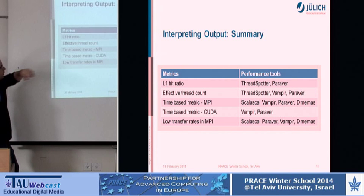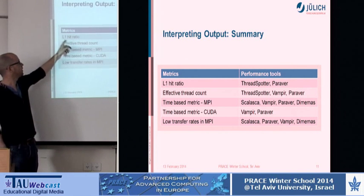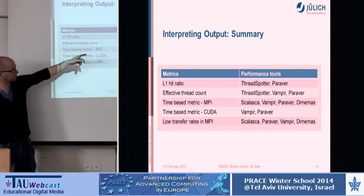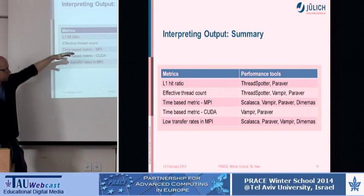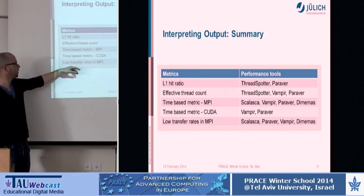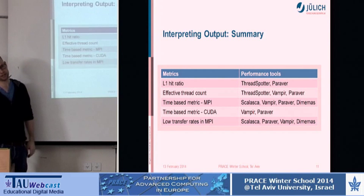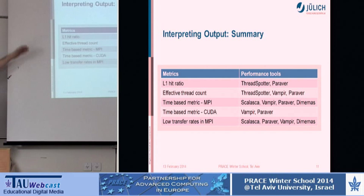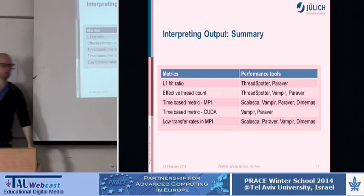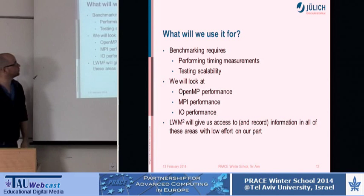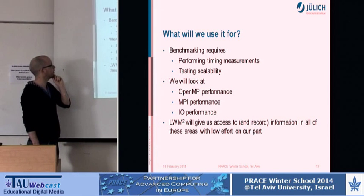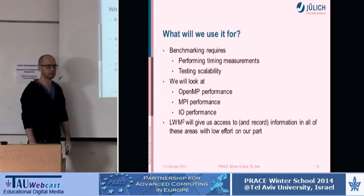When interpreting the output: if you have cache problems, the tools you'd want to look at are ThreadSpotter or Paraver. If your effective thread count is low, again ThreadSpotter, Paraver, and Vampir are relevant. For MPI issues such as low transfer rates, Scalasca can help. For CUDA you'd go to Vampir and Paraver. These are the kind of things you look at from the LWM output to decide which tool to use next. Today we'll use it for benchmarking — timing measurements, scalability testing, covering OpenMP, MPI, and IO.